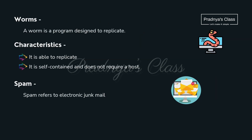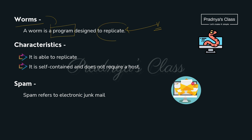The second type of malicious program is Worms. It is also a malicious — that is, harmful — program, and just like a virus it can replicate too. The key difference is that it does not require a host.